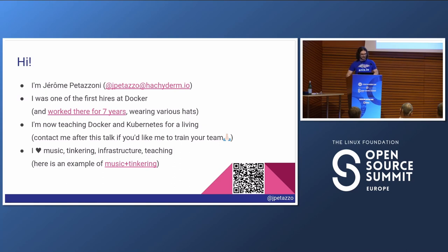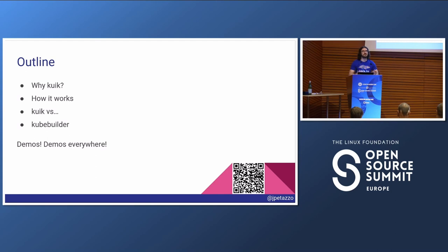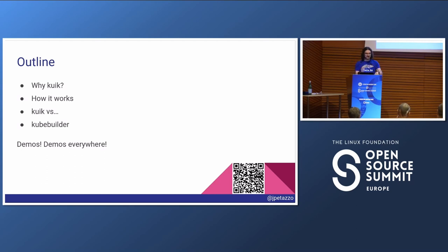Today we're going to talk about Kube Image Keeper, or QUIC. We try to make it pronounced like QUIC with a soft U, but for English speakers that's just weird, so we settled on QUIC. I'm going to explain how it works, why we wrote it, compare it to other options, and talk a bit about Kube Builder. There's going to be a ton of demos. Before the demos, I'm going to eat a grape - back when I was at Docker, a Spanish team would eat a piece of grape before live demos. Here is for the demo gods, just in case.